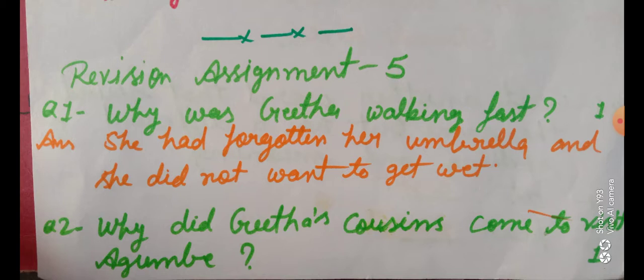Question number 1: Why was Gita walking fast? Answer: She had forgotten her umbrella and she did not want to get wet. She, i.e. Gita, apna umbrella bhool gai thi aur wo bheegna nahi chahati thi.